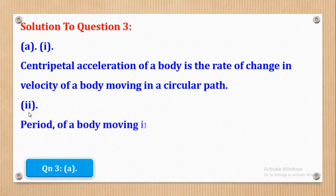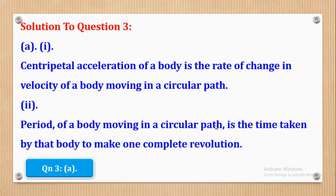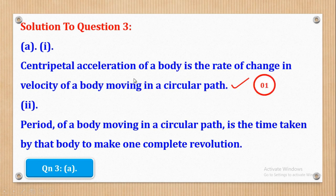Then for Roman 2, they wanted you to define period and we shall say: period of a body moving in a circular path is the time taken by that body to make one complete revolution. Now let's see how marks can be awarded. Stating the definition of centripetal acceleration gives you one mark, and the definition of period gives you another one mark.